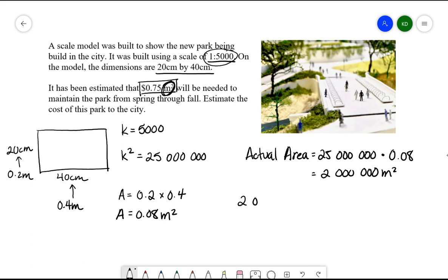And if we're going to be paying 75 cents per square meter, then we'll multiply these two values together. And this is going to give us the price that we're going to pay. And what's nice about using units here is that meters squared, the area of the actual park, multiplied by how much we're paying per meter squared, those units cancel and I'll be left with an answer in dollars. So when I multiply those together, I'm going to get $1,500,000. So this is how much would need to be spent on the park to maintain it from spring to fall.